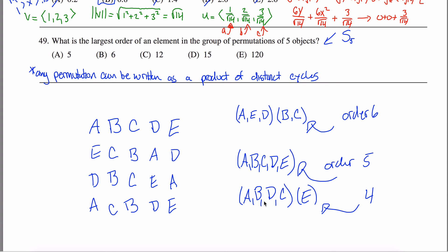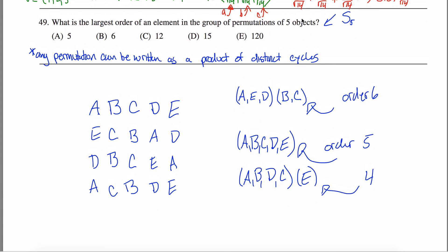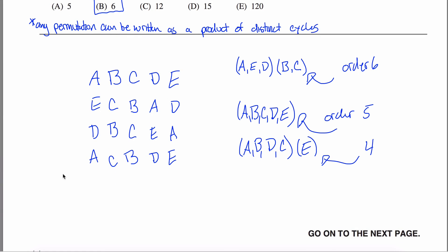Can we do better than 6 with five objects? The possible partitions of 5 are: (5), (4,1), (3,2), (2,2,1). LCM(5)=5, LCM(4,1)=4, LCM(3,2)=6, LCM(2,2,1)=2. The maximum is 6, from the partition (3,2). So the largest order of an element in S5 is 6.